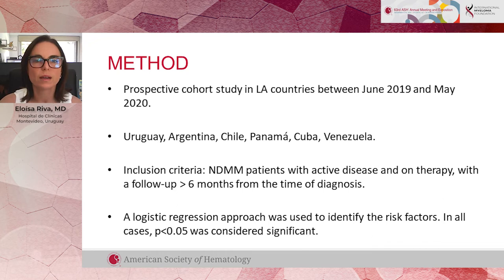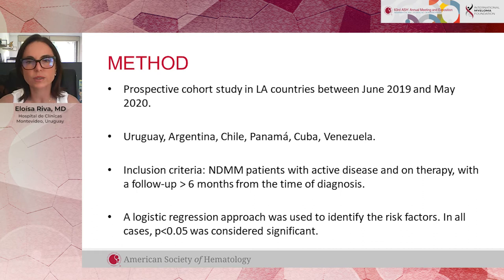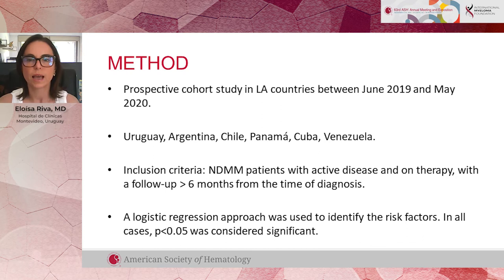This prospective cohort study was developed in six Latin American countries between June 2019 and May 2020. Participating countries were Uruguay, Argentina, Chile, Panama, Cuba, and Venezuela. Inclusion criteria were active disease receiving therapy and a follow-up of six months from the time of diagnosis. Patients with other plasma cell disorders or HIV-positive patients were excluded.